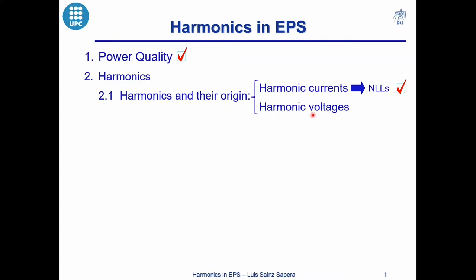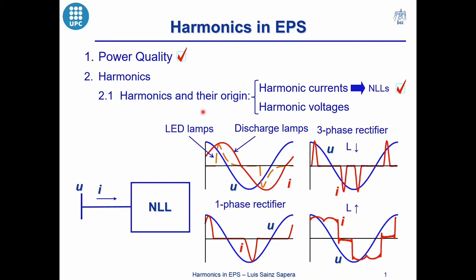According to this, we have in the next screen four different examples of non-sinusoidal currents consumed by nonlinear loads. Up to the left, we have the non-sinusoidal current consumed by discharge lamps, the red waveform, and the non-sinusoidal current consumed by LED lamps, the orange waveform.